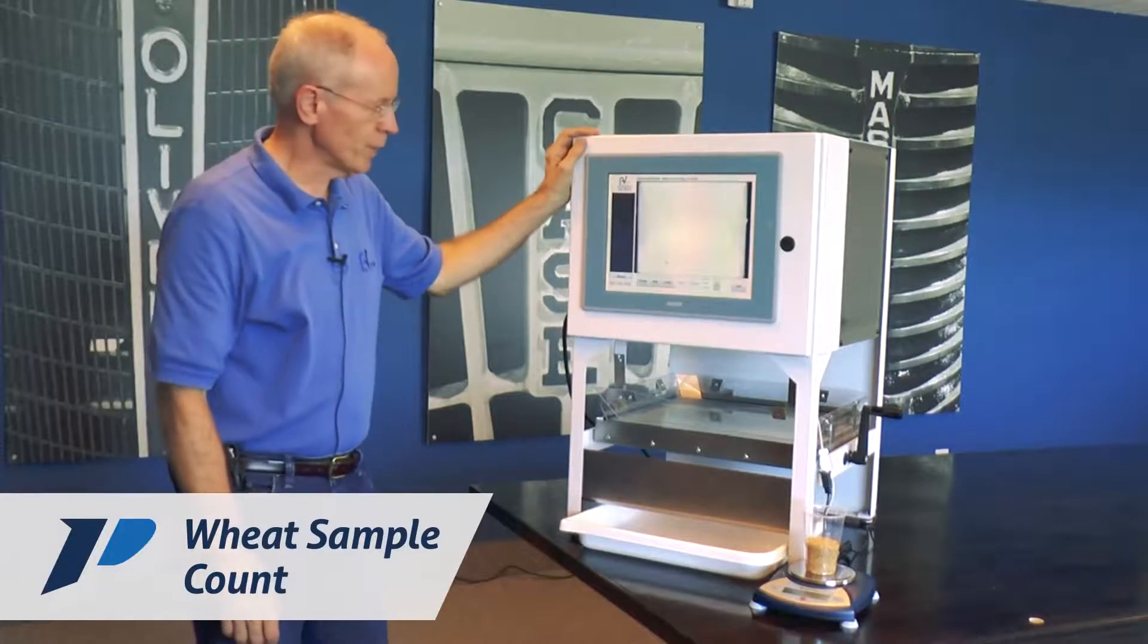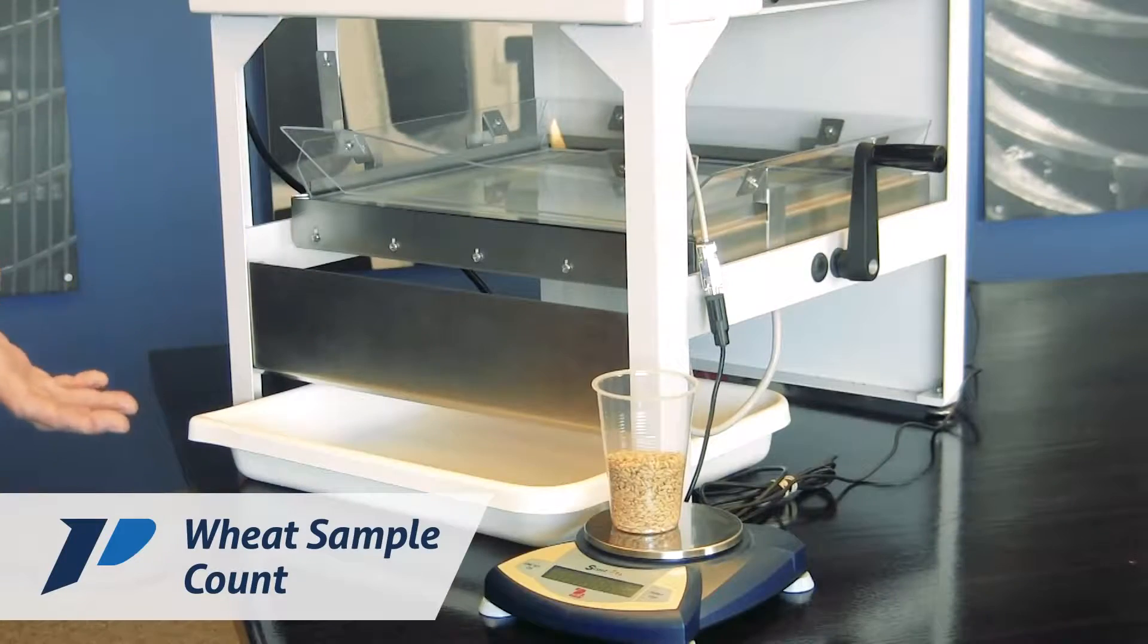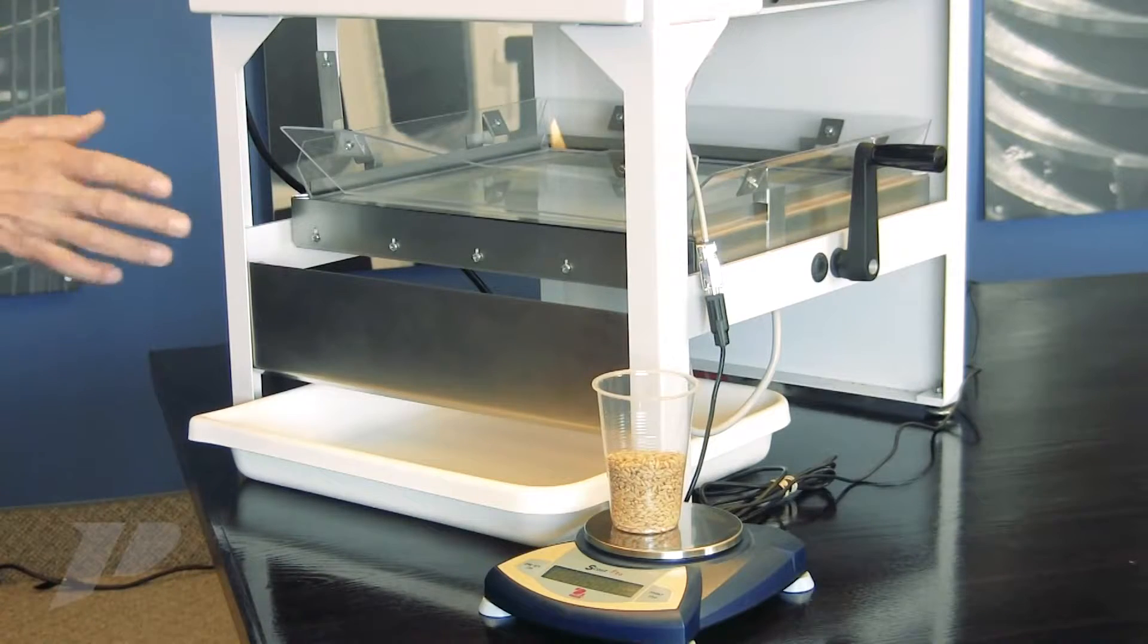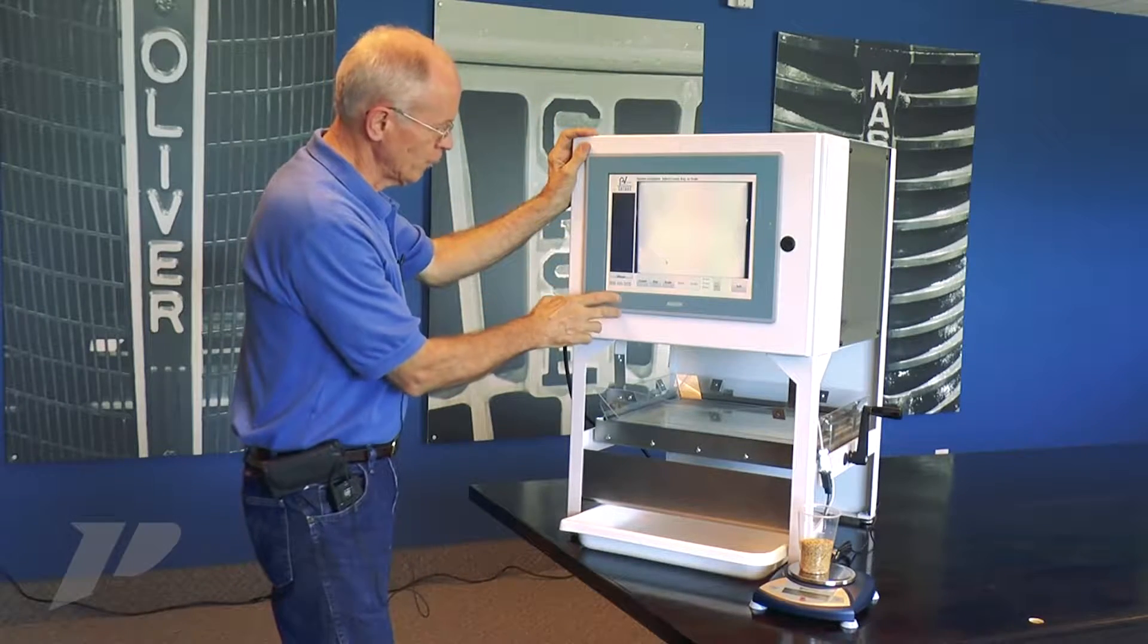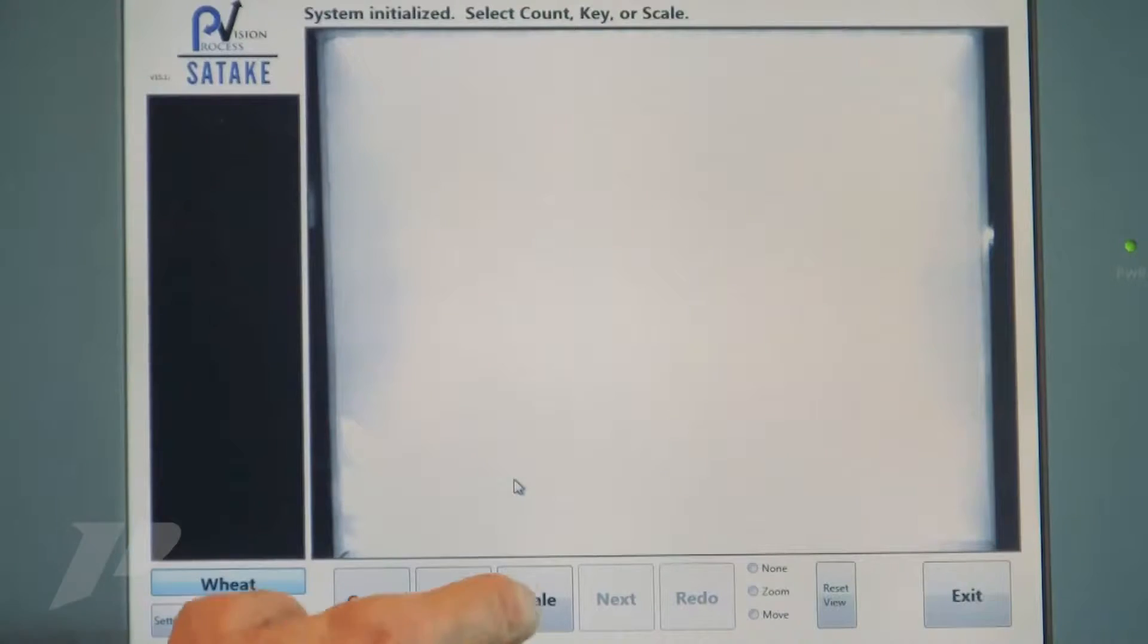I'd like to run a sample for you of wheat on the OptiCount lab. The scale weight will be taken automatically from the scale into the computer. The system's been initialized. We know the recipe that we're on, so I'm going to click scale.